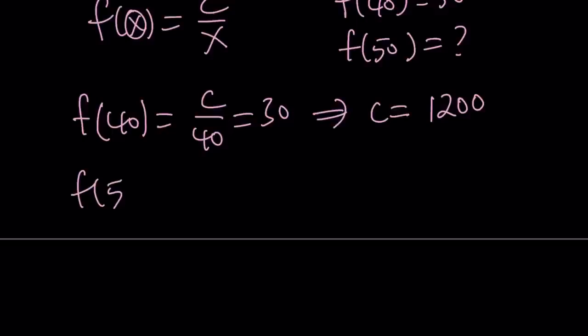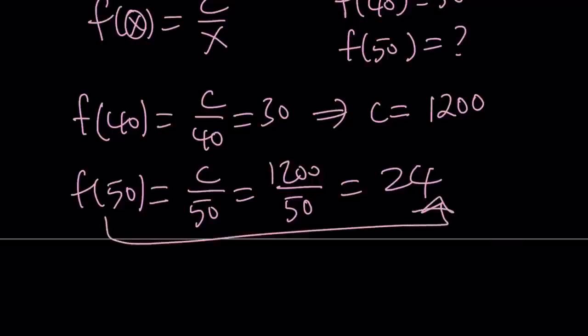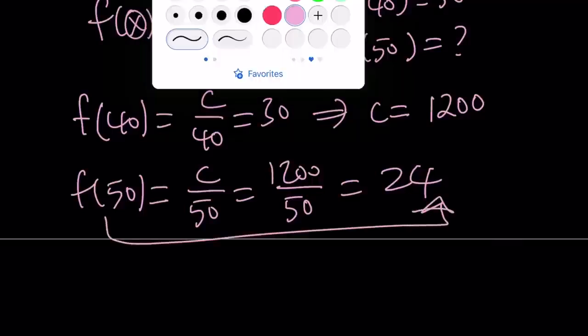How about f of 50? Well, f of 50 is equal to c over 50. But c is 1,200, and the answer is going to be 24. So f of 50 is 24. And this brings us to the end of the first method.